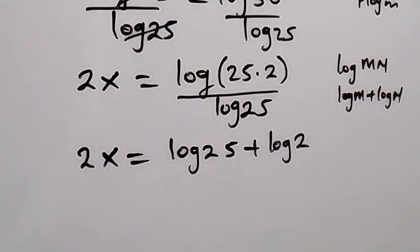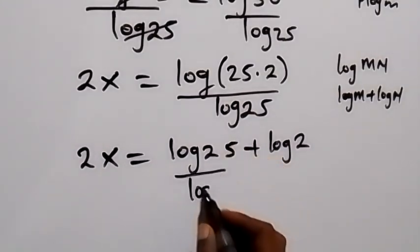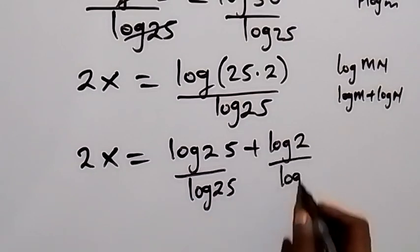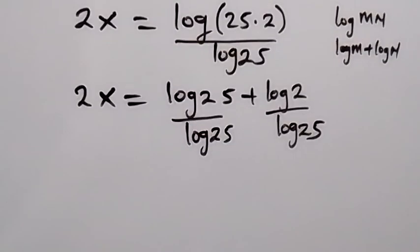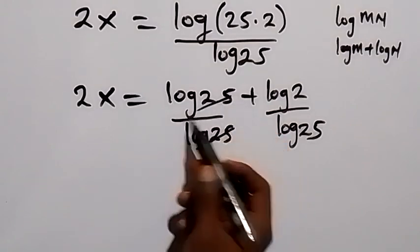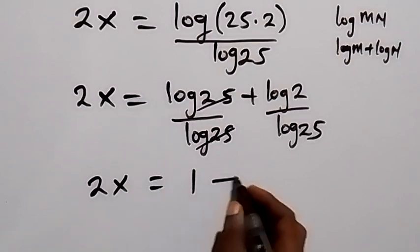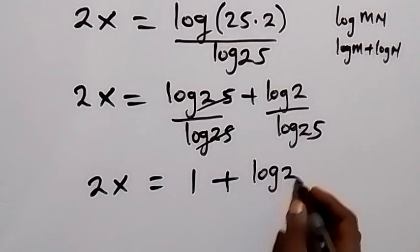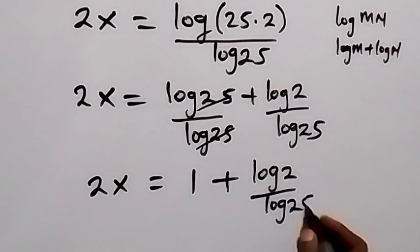All divided by log 25, we can separate it: log 25 divided by log 25, and log 2 divided by log 25. From here, log 25 divided by log 25 becomes 1, so we have 2x equals 1 plus log 2 divided by log 25.